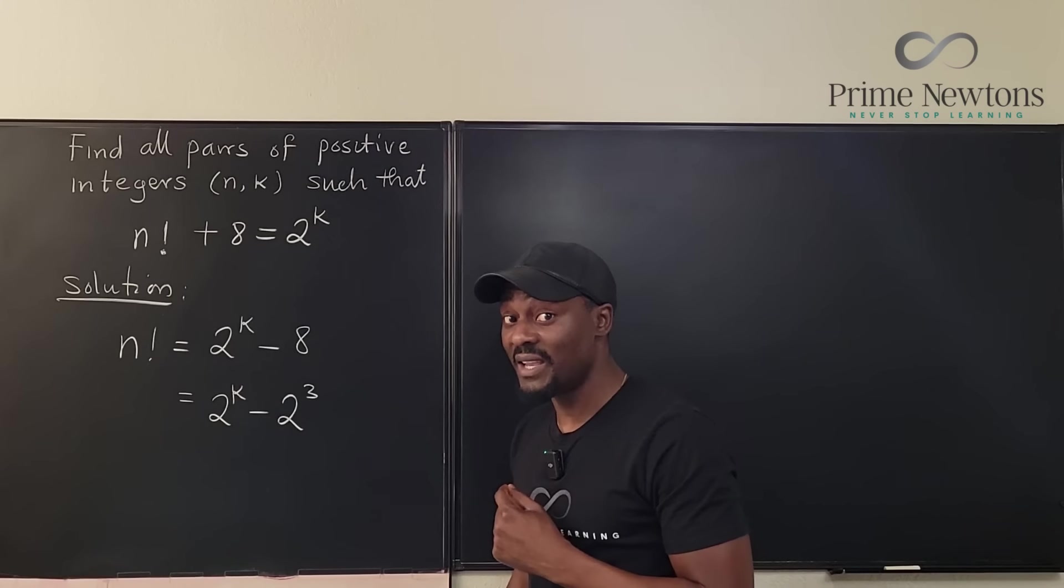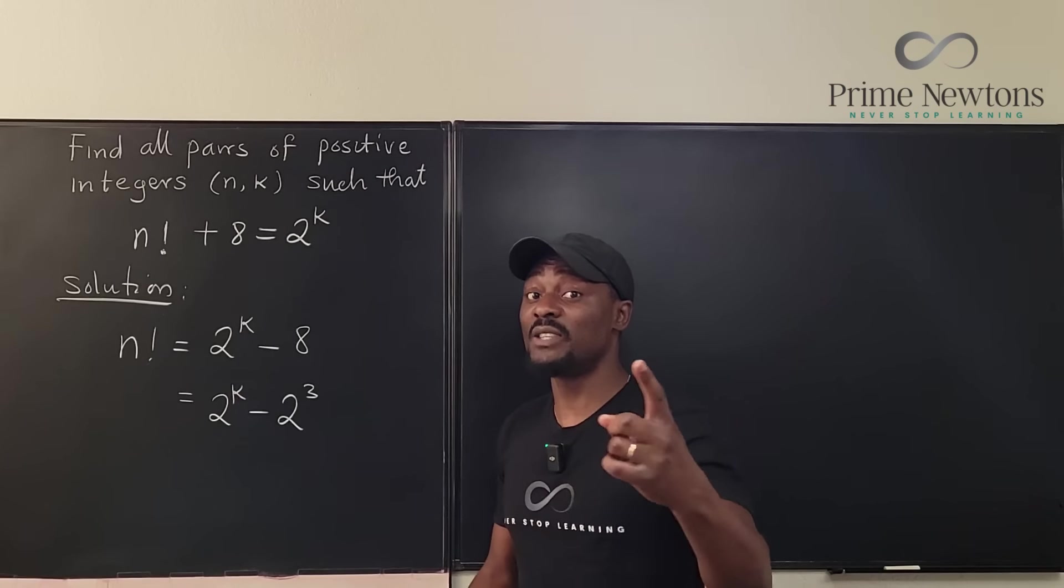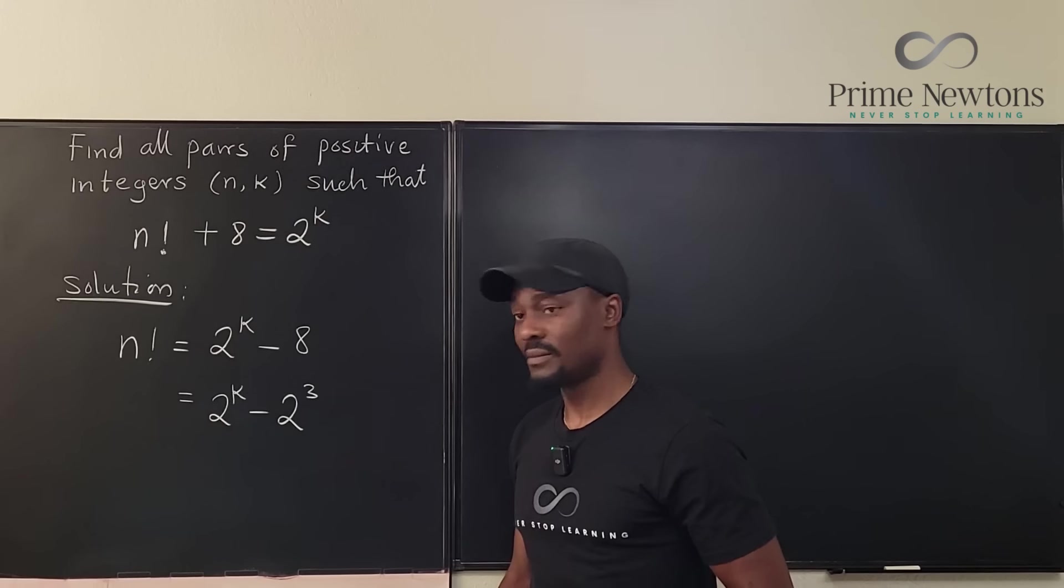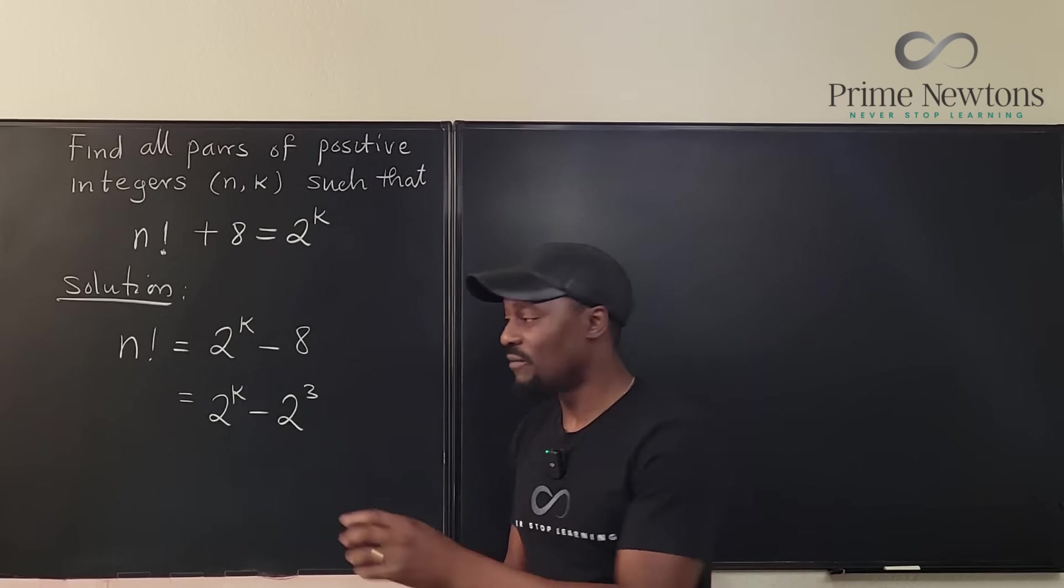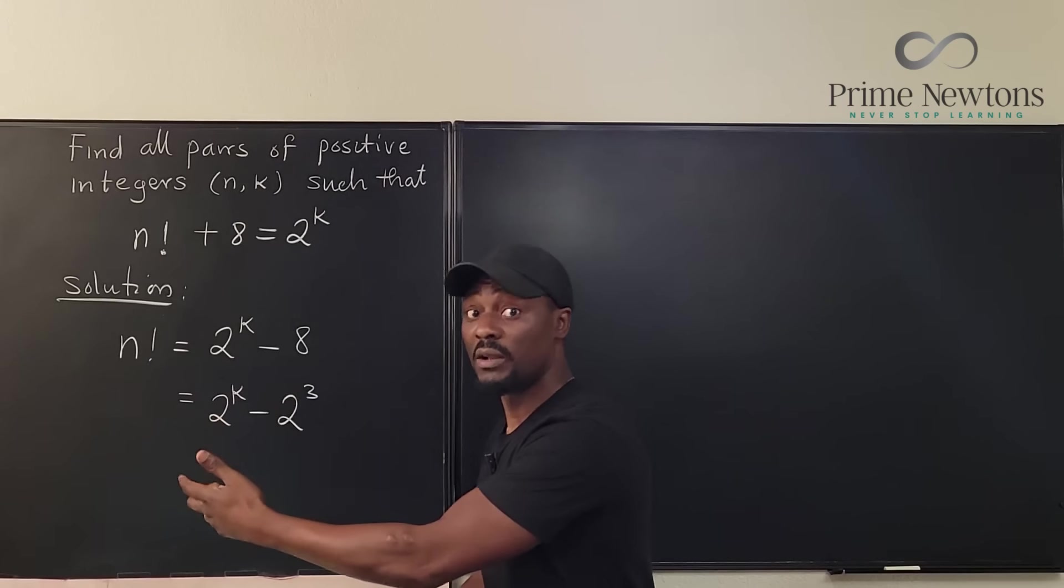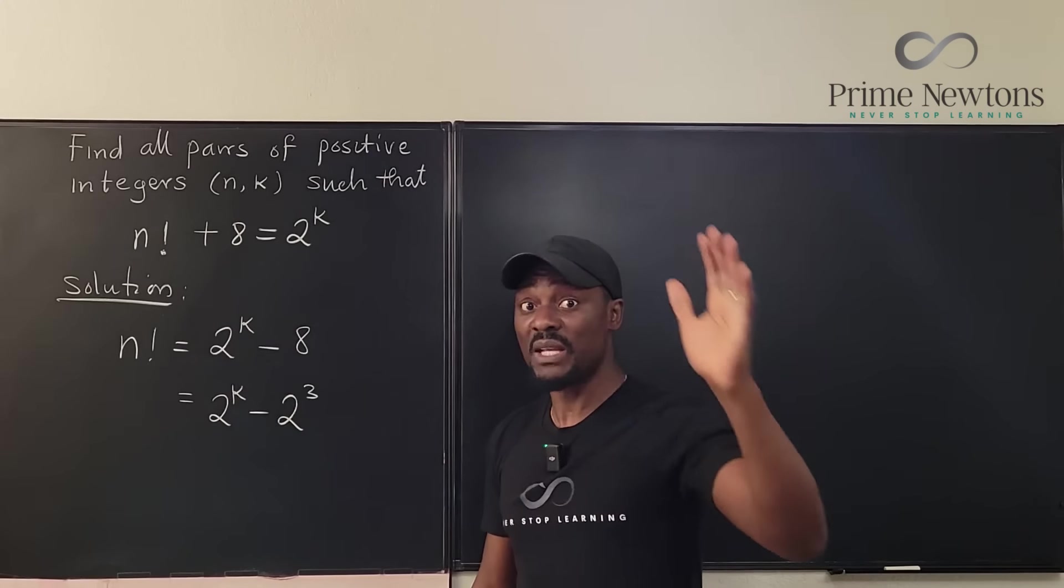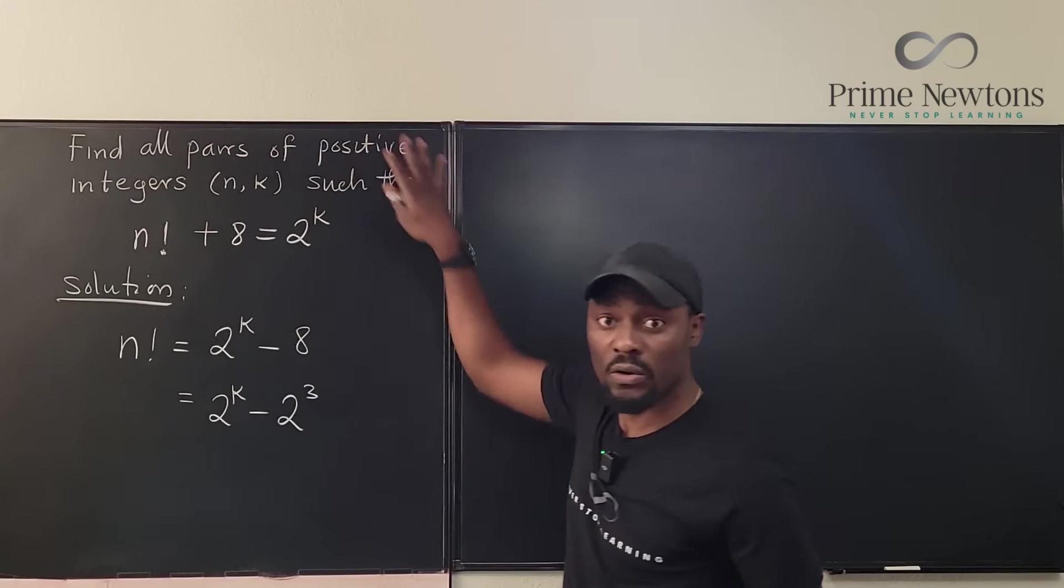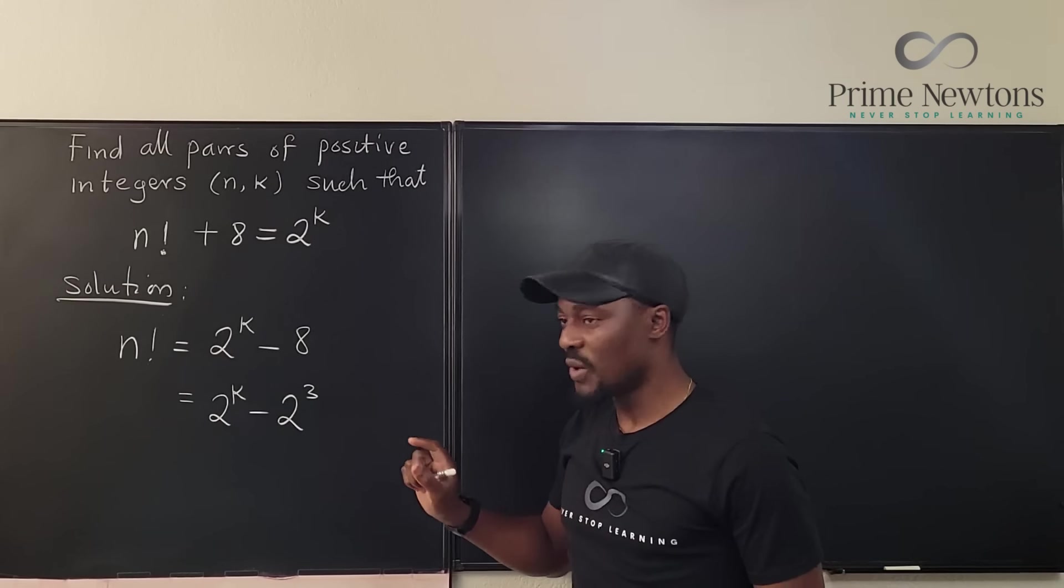I'm going to assume that three is the smaller version and k can be any big number because we're looking for all pairs. So what I would do is factor out 2 to the third and see what happens.